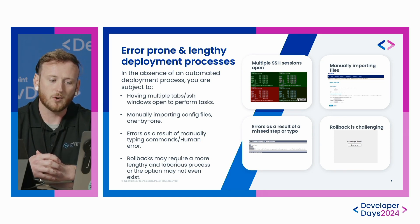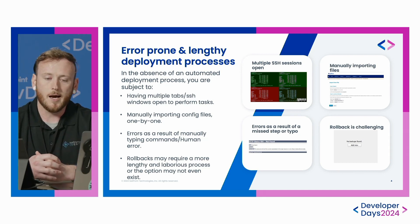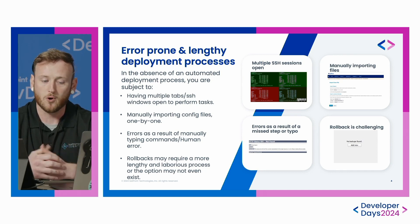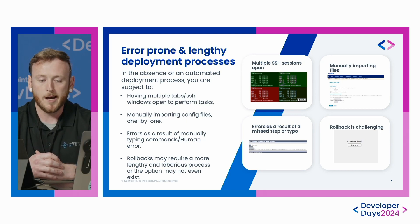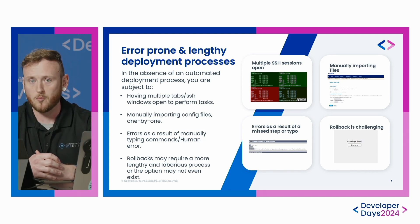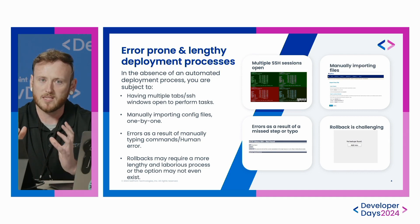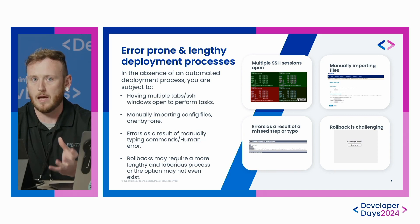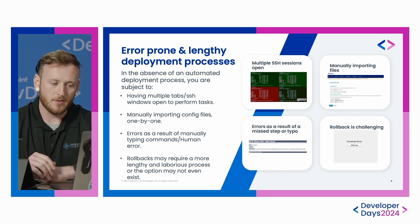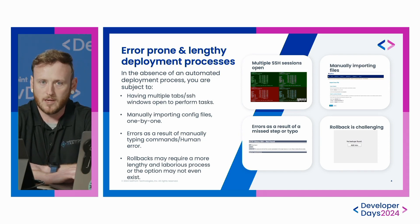Rollbacks can also require a lengthy and laborious process when done manually. If you have a botched deployment and you're importing file by file, it's going to take a very long time to roll back to where your environment was before the deployment. All of these issues have a similar root cause: the human element. By automating, you can get around this problem. So let's go ahead and look at building out the solution.